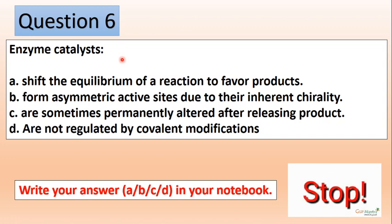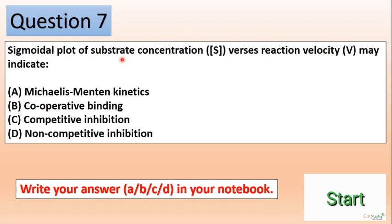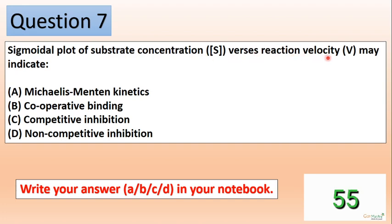Okay guys, moving to the next question. A sigmoidal plot of substrate concentration versus reaction velocity may indicate what?